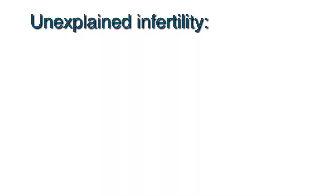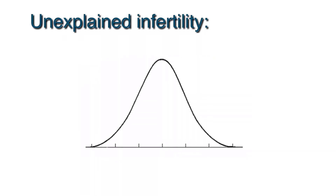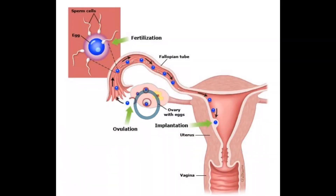When the workup comes back normal, we are left with a diagnosis of unexplained infertility. Unexplained infertility can be due to couples just falling on the lower end of the spectrum in terms of conceiving, or it can be due to causes that we cannot identify with our current testing methods. Sometimes this can be due to issues related to the egg, sperm, or implantation.